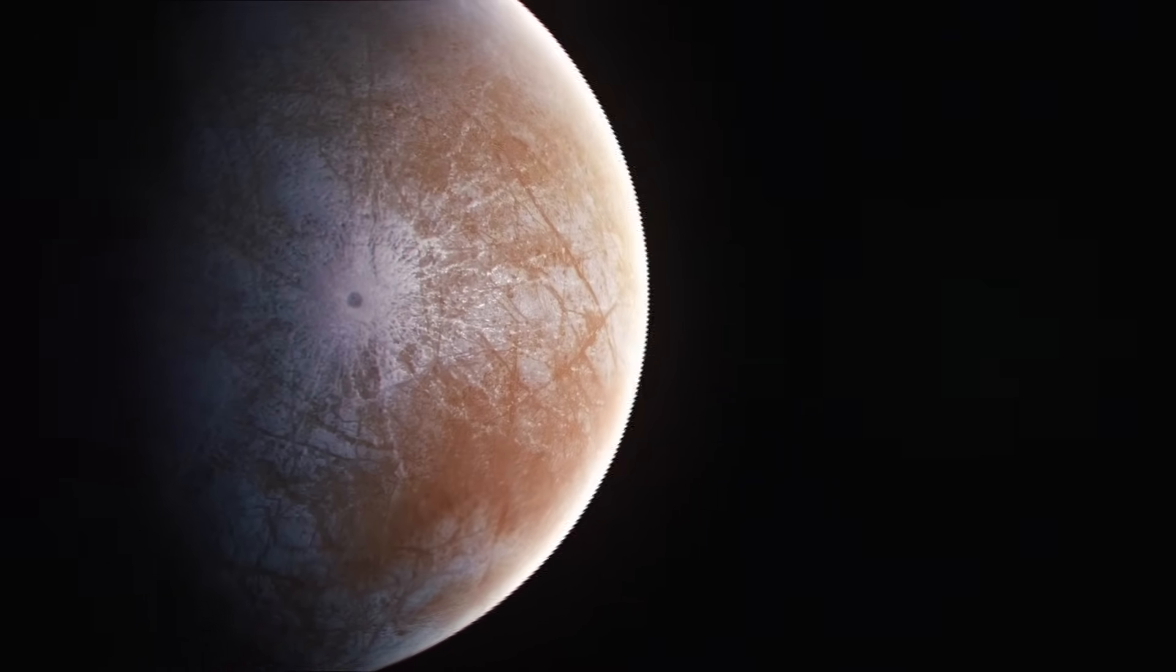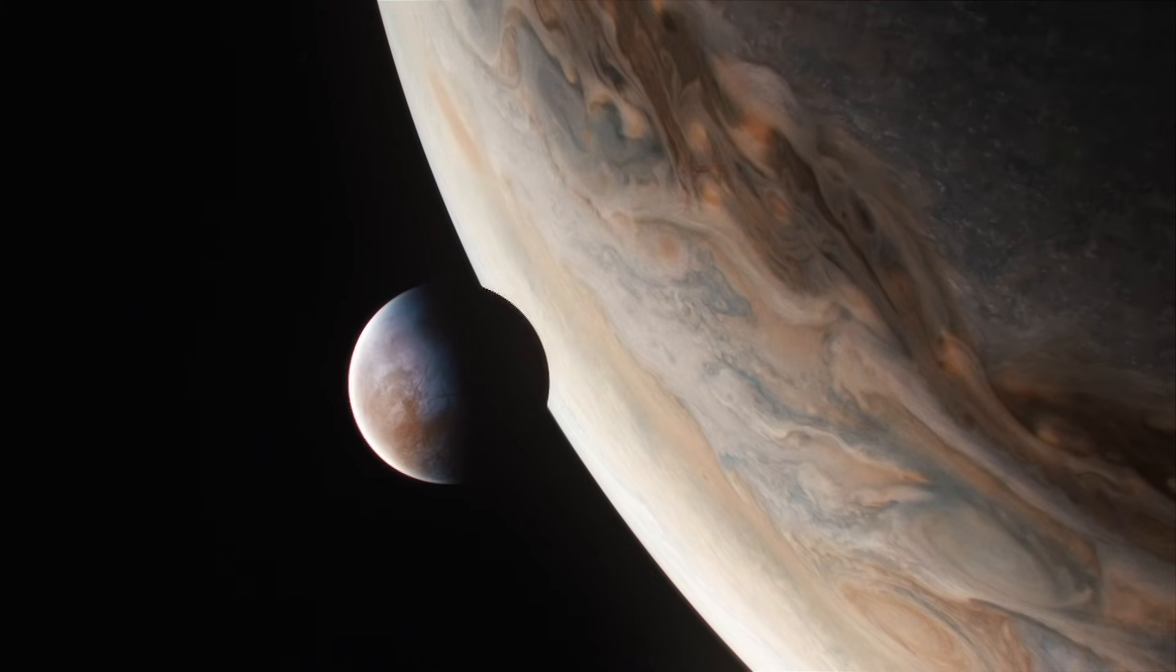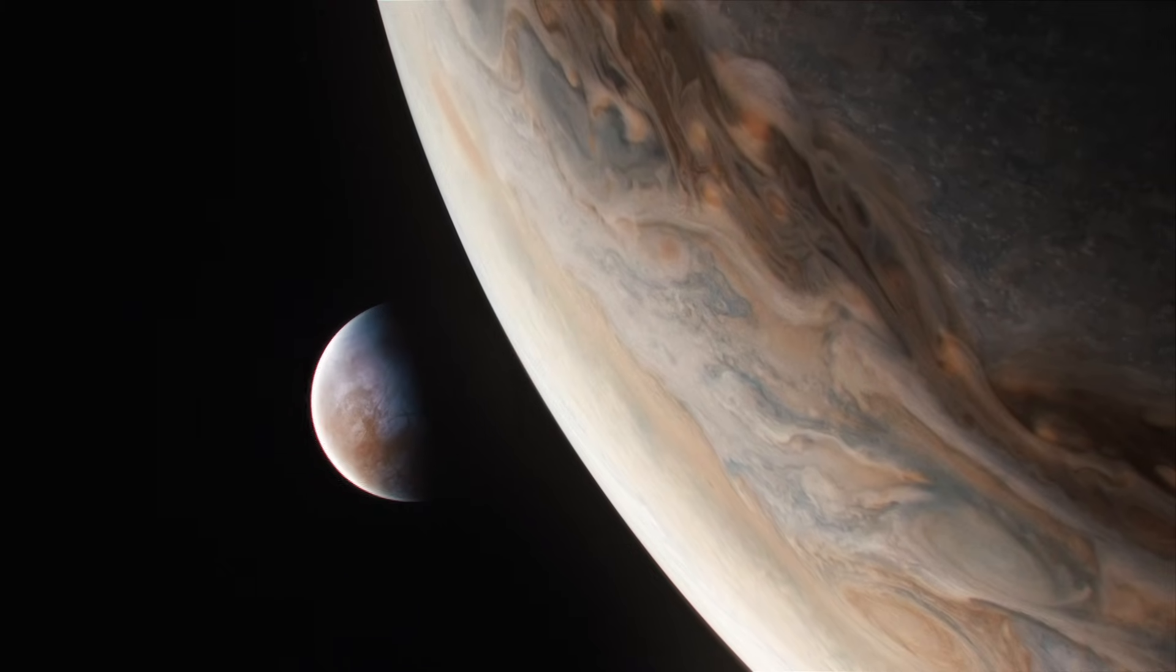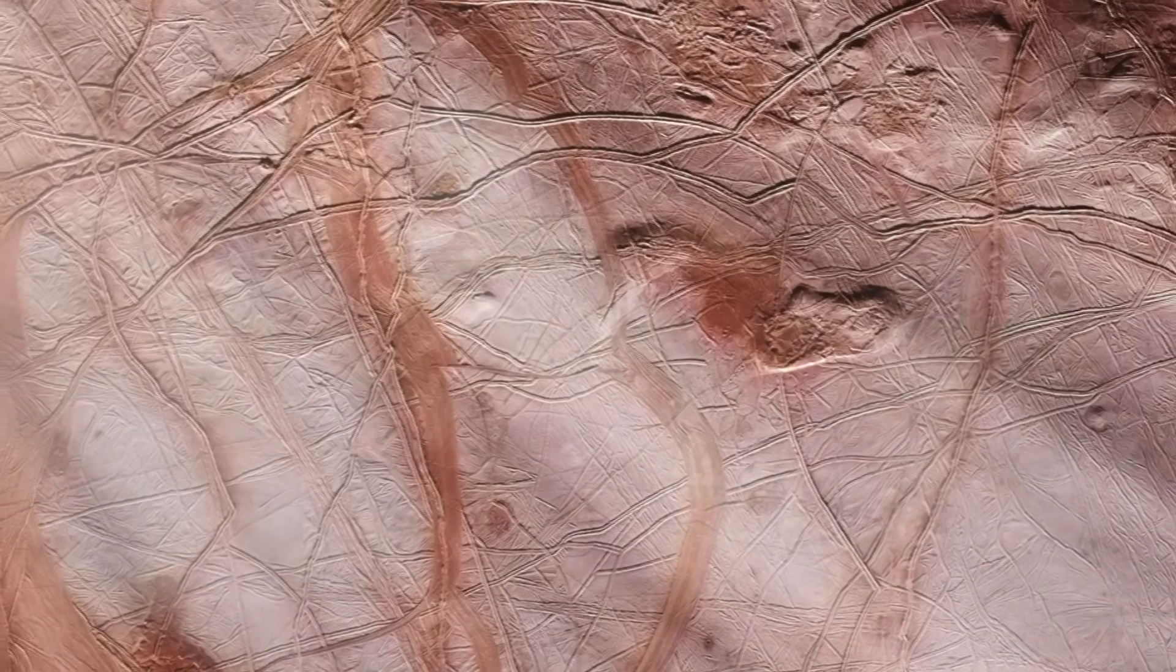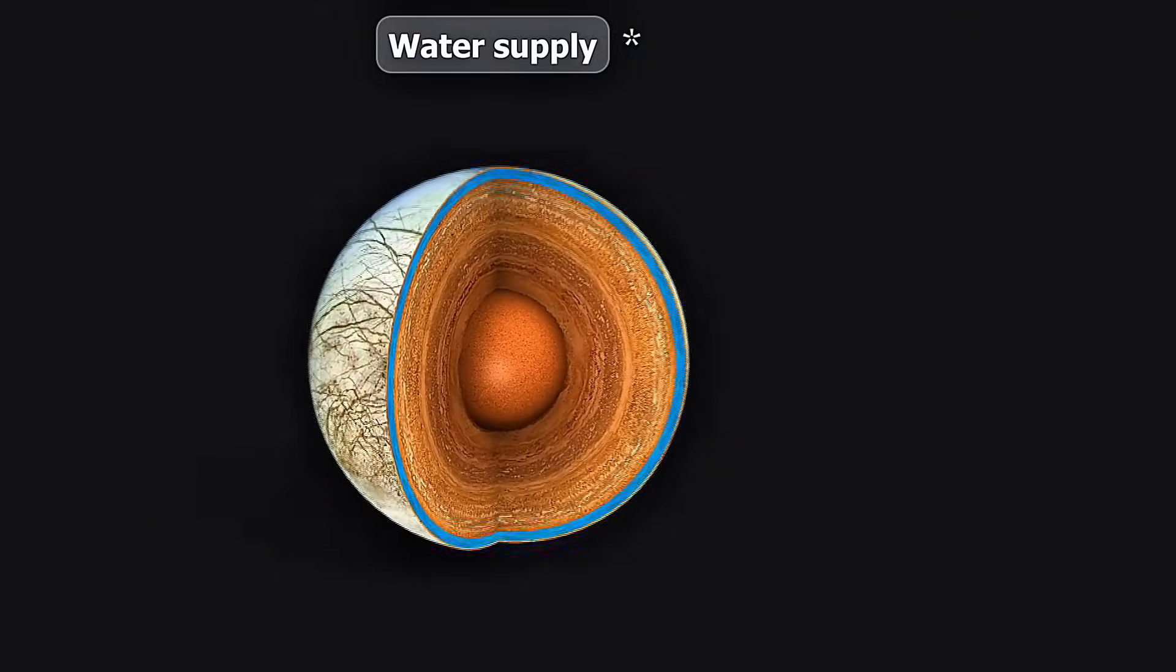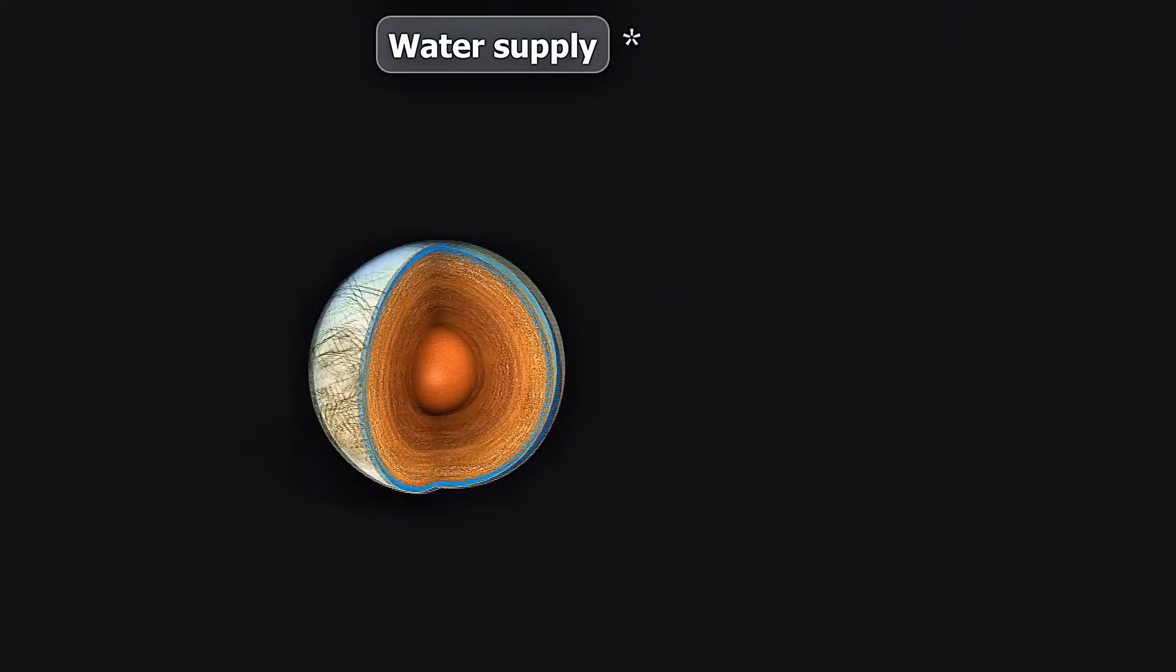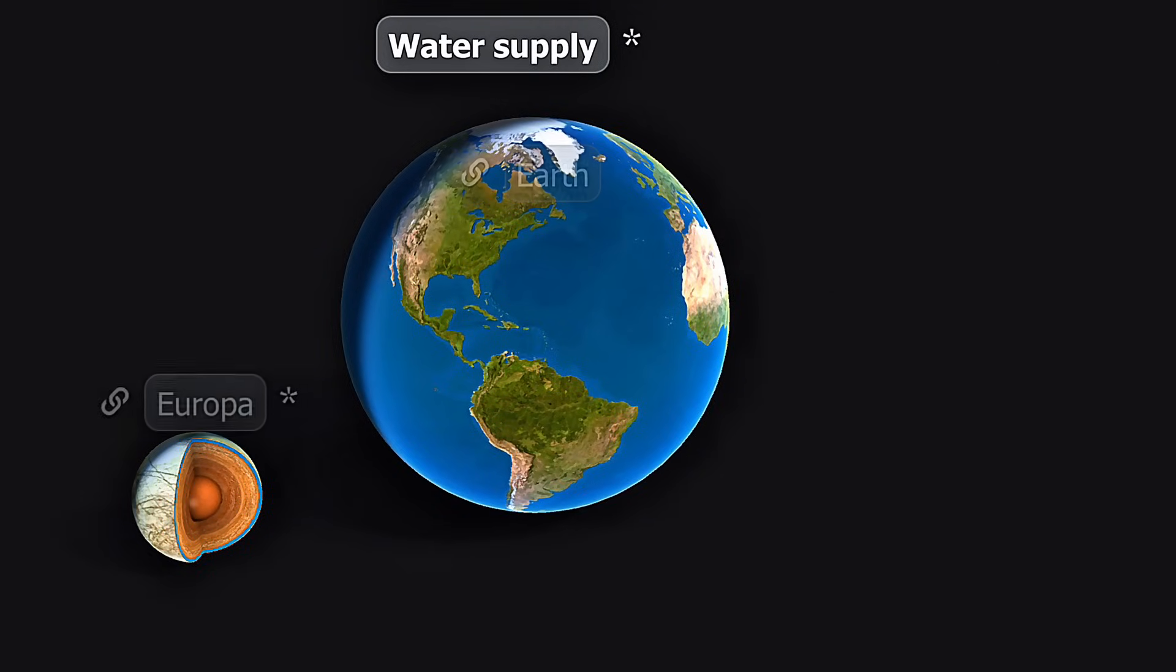Welcome back to the outer solar system and to Jupiter's moon Europa. Decades of evidence, from its strange magnetic field to its young fractured surface, all point to one stunning conclusion. Beneath its 10 to 15 mile thick ice shell lies a global, salty, liquid water ocean, containing more than twice the water of all of Earth's oceans combined.